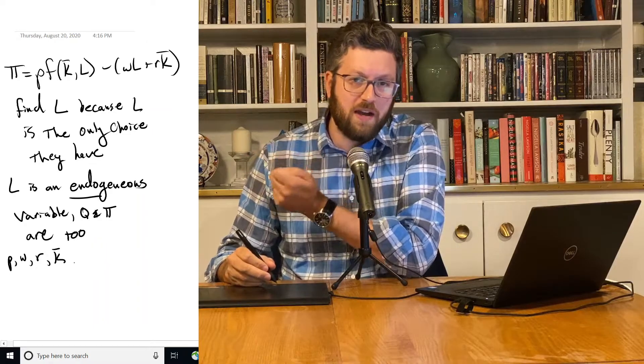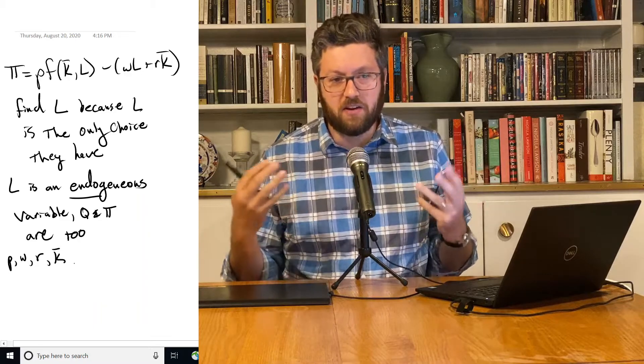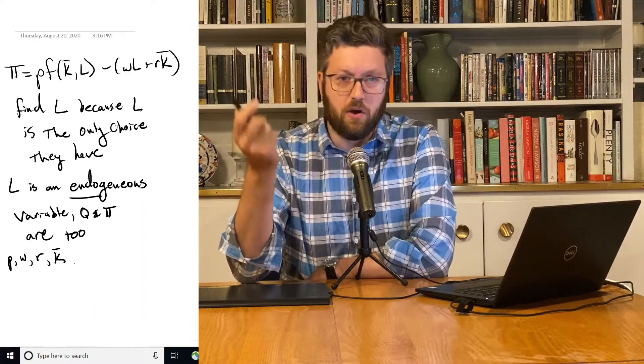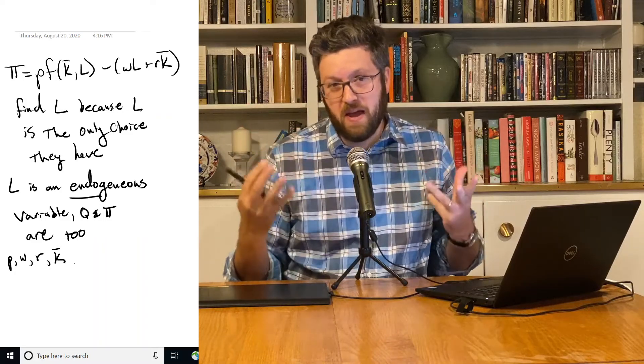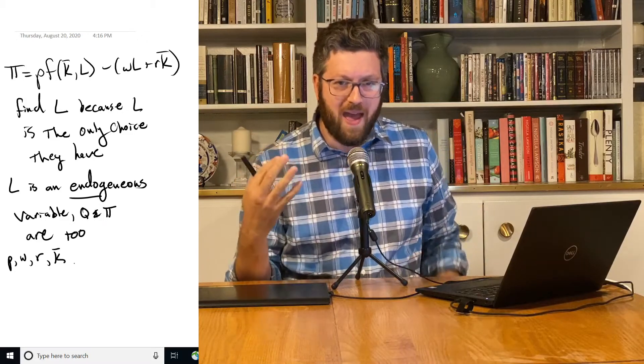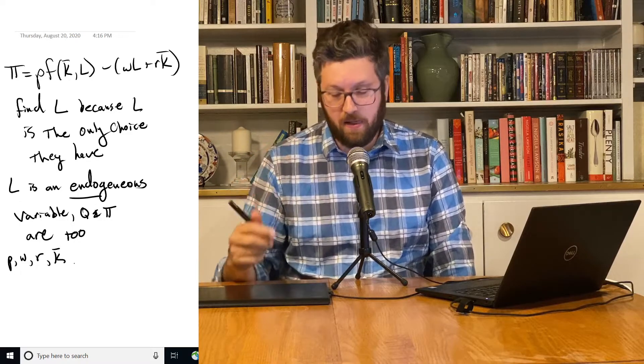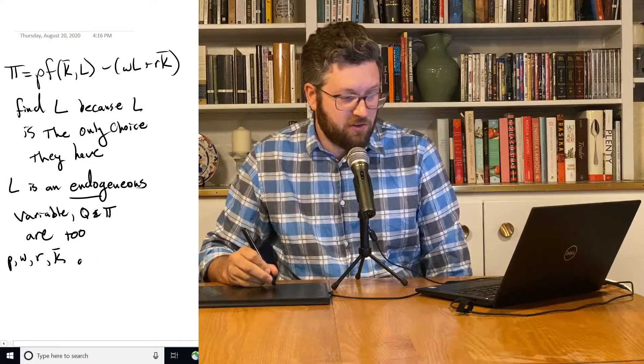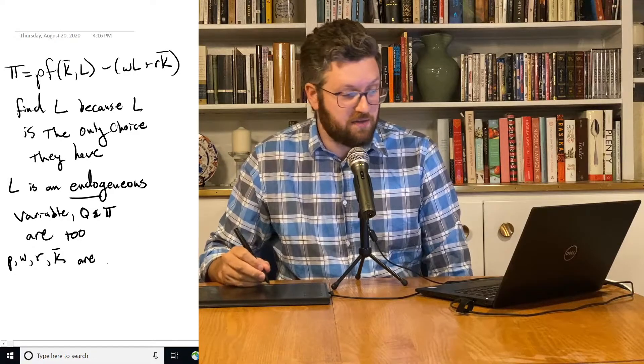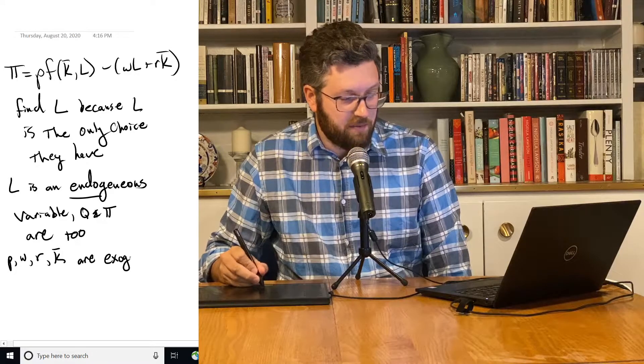We're not trying to find them. Instead, we're taking those as given. In fact, we can't find L if we don't know P. We can only find how it depends on P. But if we don't have the exact price, we won't be able to find the exact L. So P, W, R, and K have to be given to us for us to solve the problem and to find the endogenous variables. These ones are called exogenous variables.